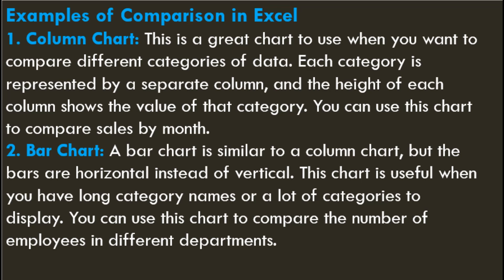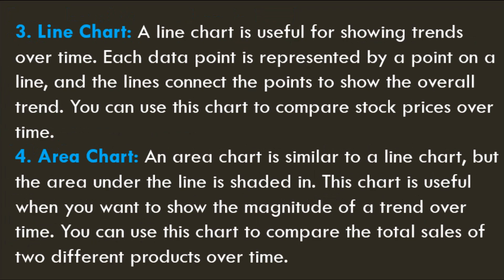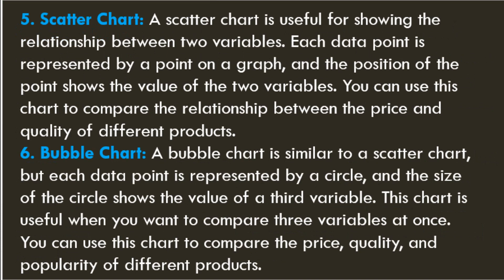2. Bar Chart — a bar chart is similar to a column chart, but the bars are horizontal instead of vertical. This chart is useful when you have long category names or a lot of categories to display; you can use it to compare the number of employees in different departments. 3. Line Chart — useful for showing trends over time; each data point is represented by a point on a line, and the lines connect the points to show the overall trend. You can use this to compare stock prices over time. 4. Area Chart — similar to a line chart, but the area under the line is shaded in; useful for showing the magnitude of a trend over time, such as comparing the total sales of two different products. 5. Scatter Chart — useful for showing the relationship between two variables; each data point is represented by a point on a graph, and the position shows the value of the two variables. You can use this to compare the relationship between price and quality of different products.